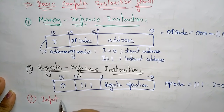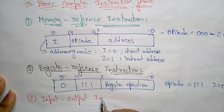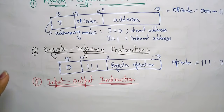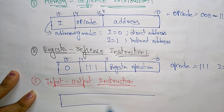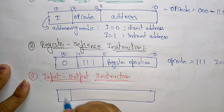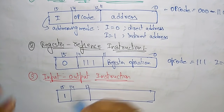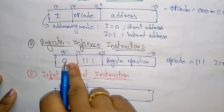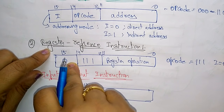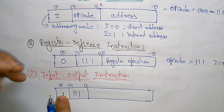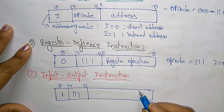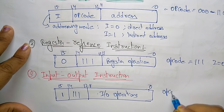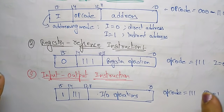The third type is the input/output reference instruction. Its format is the same as the register reference instruction, but the difference is that bit 15 (the I-bit) is 1 instead of 0. Bits 12 to 14 still hold 111. If bit 15 is 0, it is a register reference instruction; if it is 1, it is an input/output instruction. Bits 11 to 0 hold the I/O operations. So the opcode is 111 and I should be 1.